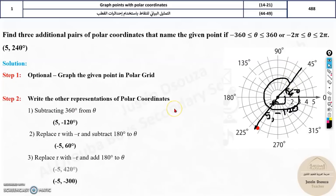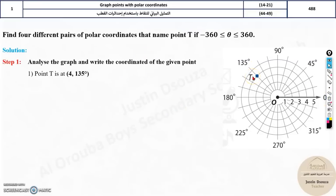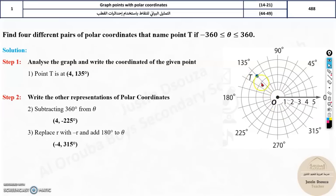There is one more practice problem: the point is (4, 135°). Pause the video and try it yourself. The positive angle is 135°. Subtracting from 360 gives the other angle: negative 225°. Then add or subtract 180° to swap the direction: you get 315° with negative 4 radius, or negative 45° with negative 4. So (4, 135°), (4, −225°), (−4, 315°), (−4, −45°).